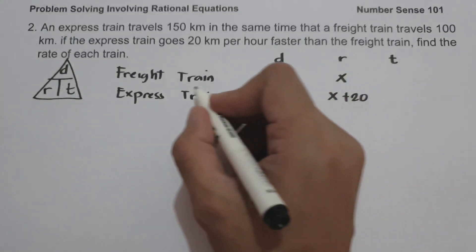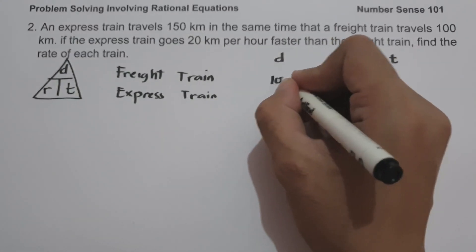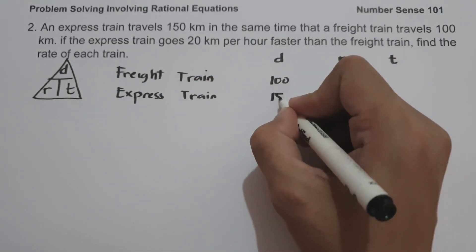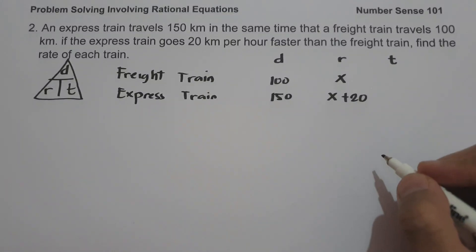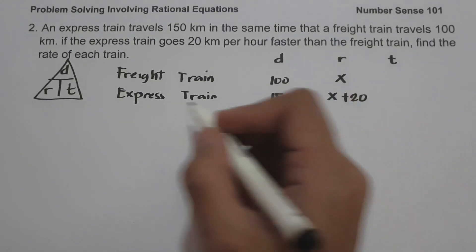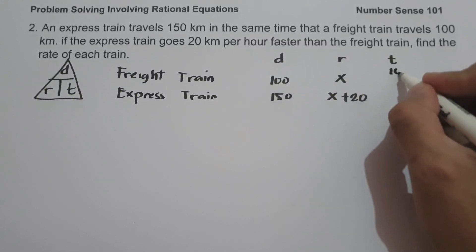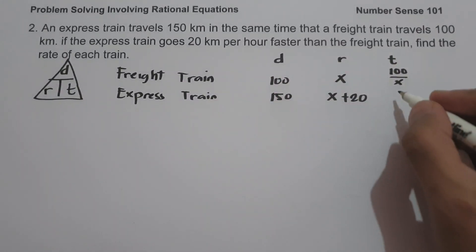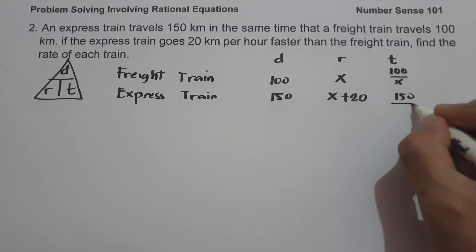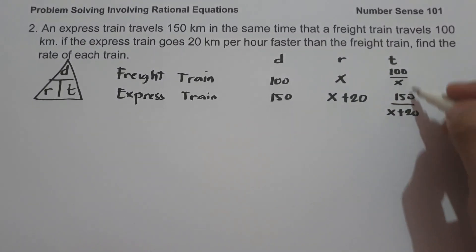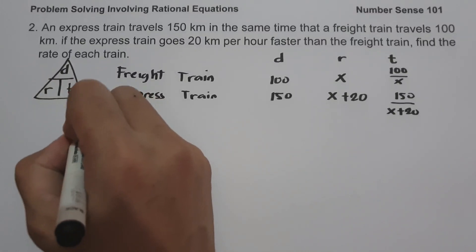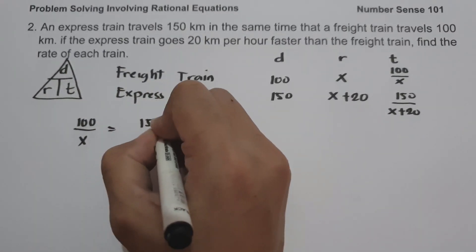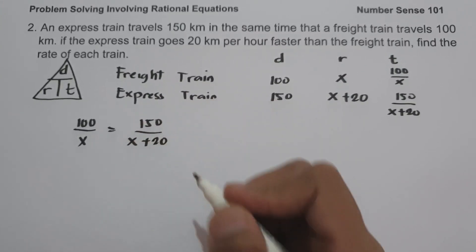The distance of the freight train is 100 kilometers, and the distance of the express train is 150 kilometers. To determine the time, we use distance over rate. So we have 100 over x for the freight train, and 150 over x plus 20 for the express train. Since the times are equal, let us equate: 100 over x equals 150 over x plus 20.